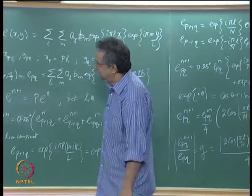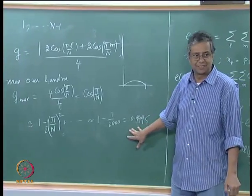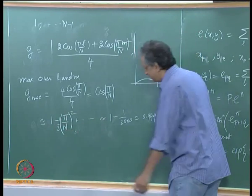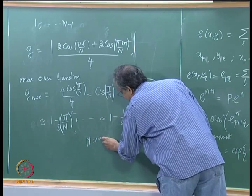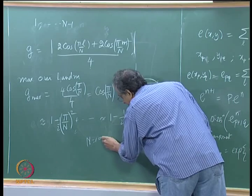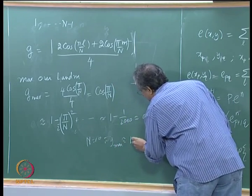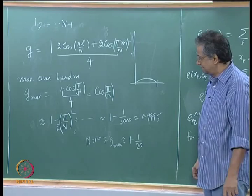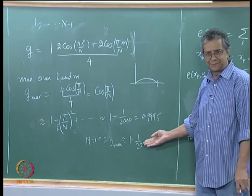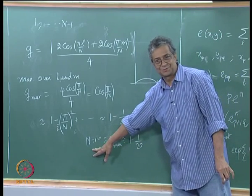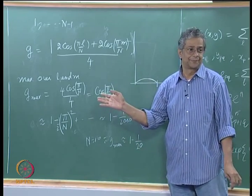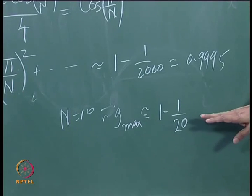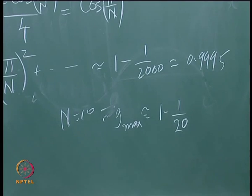Even for n=10, G_max is like 1 − 1/20, so you may be satisfied with the convergence speed. But if you want higher resolution, say n=1000, it gets really bad. The convergence rate worsens significantly as n increases.